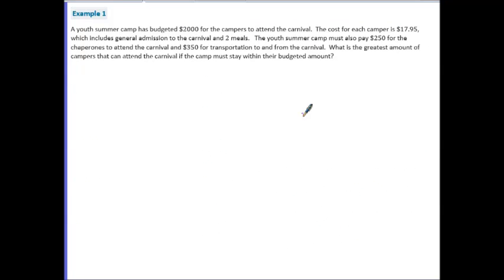Example 1: A youth summer camp has budgeted $2,000 for the campers to attend the carnival. The cost for each camper is $17.95, which includes general admission to the carnival and two meals. The youth summer camp must also pay $250 for the chaperones to attend the carnival and $350 for transportation to and from the carnival. What is the greatest number of campers that can attend the carnival if the camp must stay within their budgeted amount?